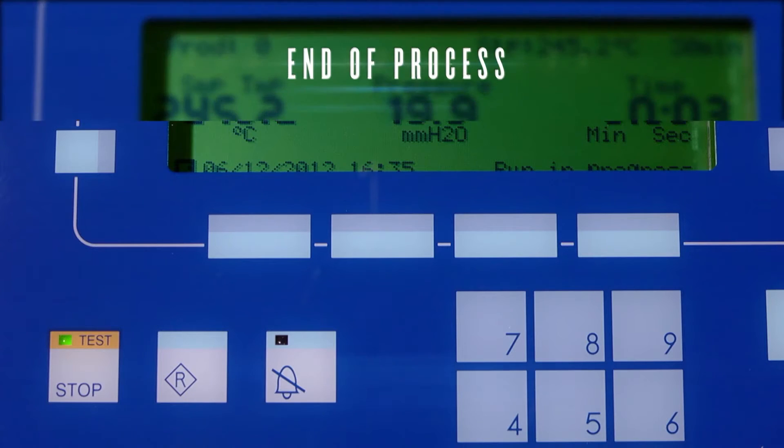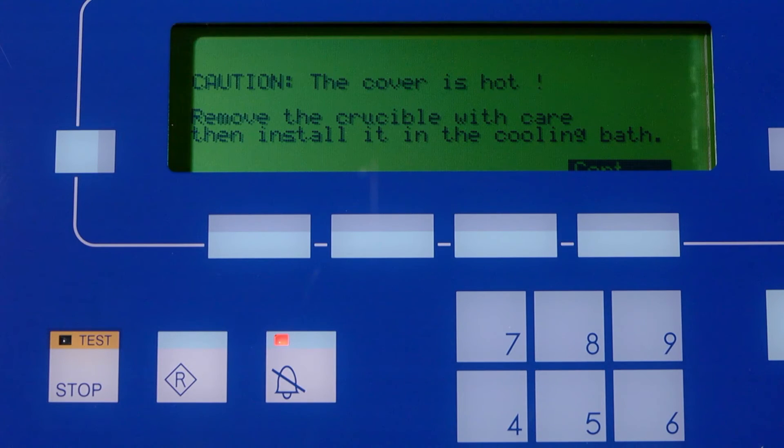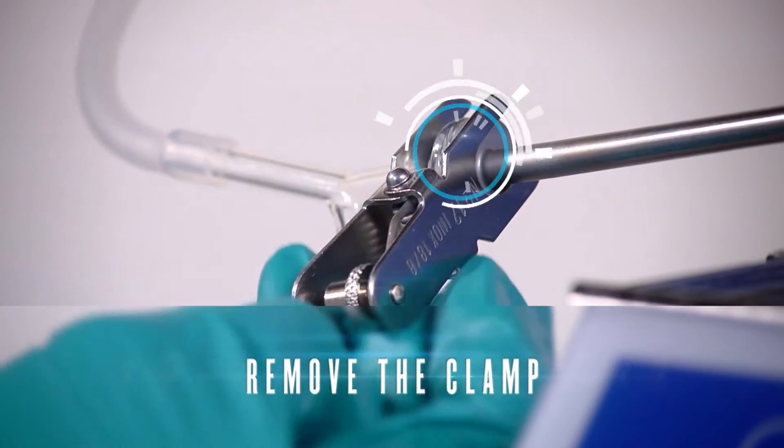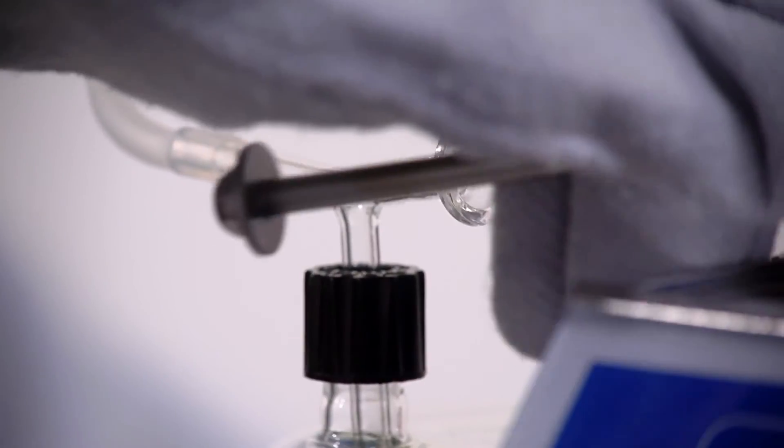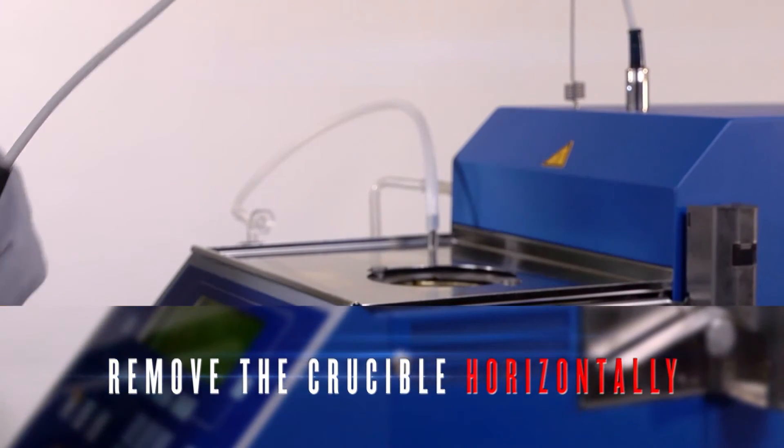The end of the test is notified by a buzz alarm. The analyzer automatically stops the heating. Turn off the alarm and untighten as soon as possible the clamping device to disconnect the extracting tube. Remove the crucible from the analyzer with care to avoid any sample liquid splashing out.